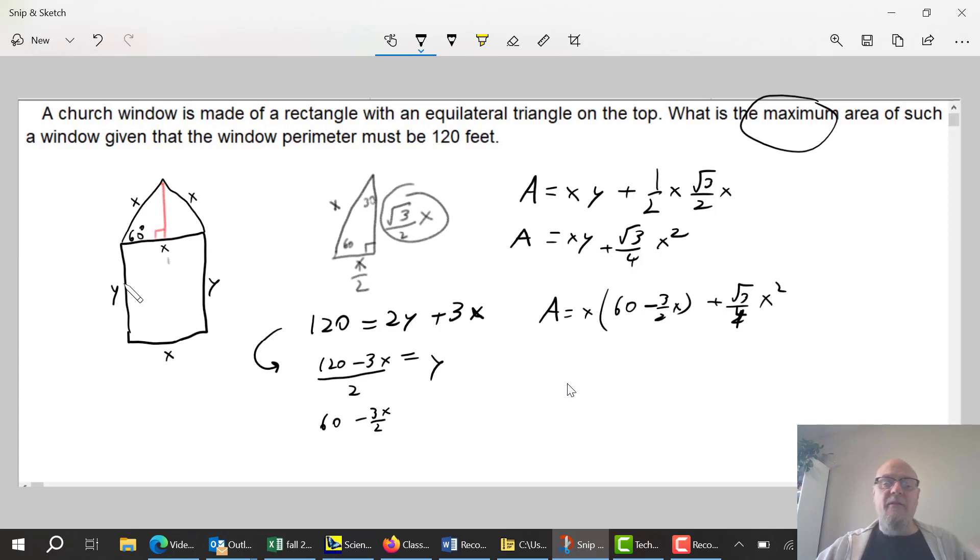I can take the derivative, set equals 0, solve. But before I take the derivative, I don't want to do product rule here with this X in this bracket, so let's just multiply this X through. That's 60X minus 3 over 2 X squared plus root 3 over 4 X squared. I could put these pieces together, common denominator - let's not right now, let's just differentiate it.